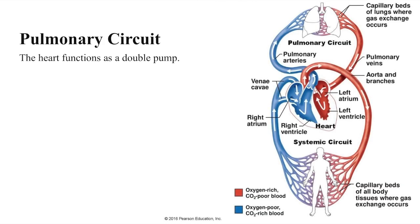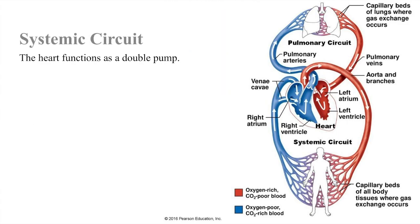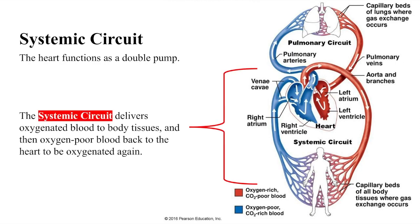The heart functions as a double pump. The right side of the heart pumps oxygen-poor blood entering its chambers into the lungs to unload carbon dioxide and to pick up oxygen. The blood vessels that carry blood to and from the lungs form the pulmonary circuit. The left side of the heart pumps oxygenated blood returning from the lungs to the rest of the body tissues. The blood vessels that carry blood to and from all body tissues form the systemic circuit.